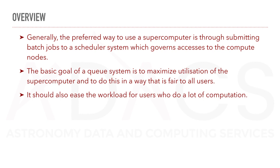In general, the preferred way to use a supercomputer is through submitting batch jobs to a scheduler system, which governs access to compute nodes. The basic goal of a queue system is to maximize utilization of the supercomputer and to do this in a way that is fair to all users. It should also ease the workload for users who do a lot of computation.